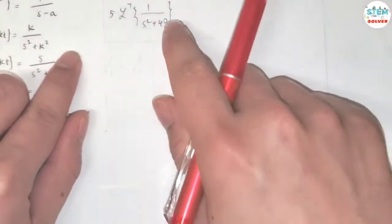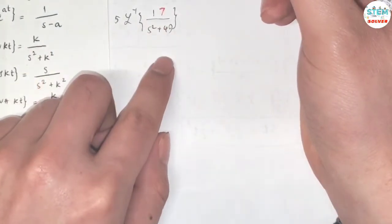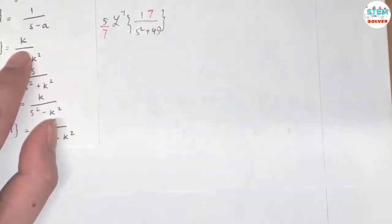We don't have 7 on top, so I'm going to make it. Just put the 7 on top. Then we have the form here. Now we have to divide by 7 to compensate, right?